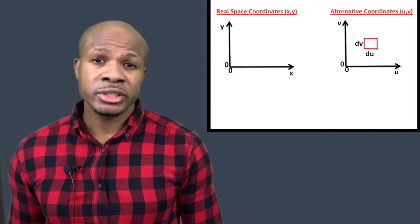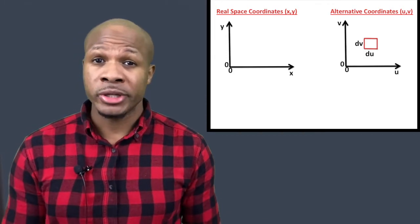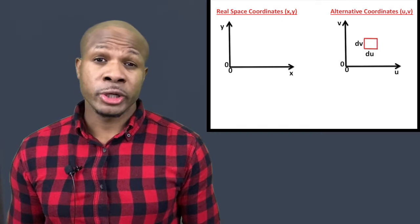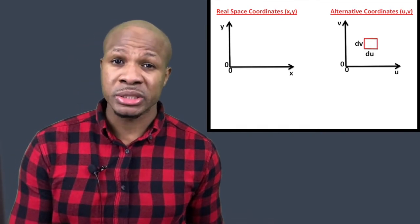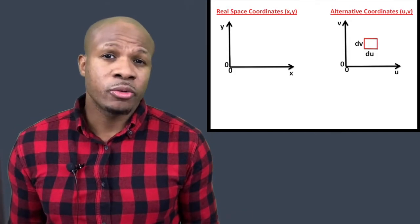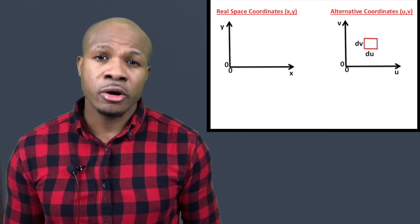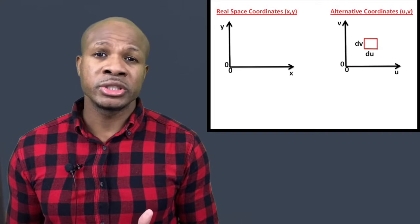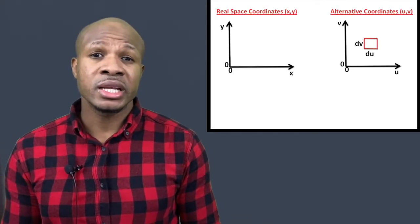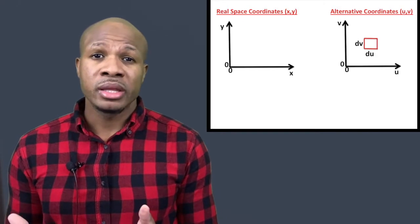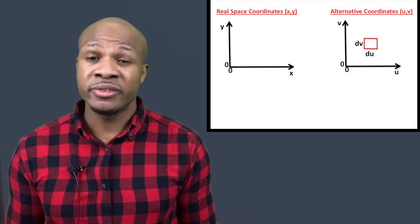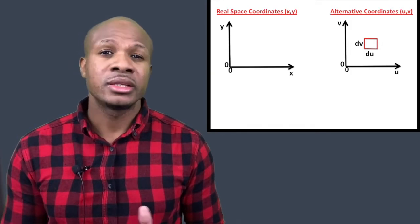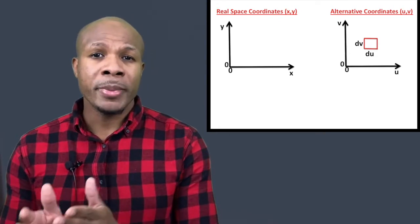Sometimes it's easier to describe a certain region with a different coordinate system — Cartesian coordinates can be too cumbersome. So for convenience, we can switch to an alternative coordinate system. For example, if you're using an alternative coordinate system uv, a tiny area in uv space gives you du·dv, which is a tiny square in uv space.